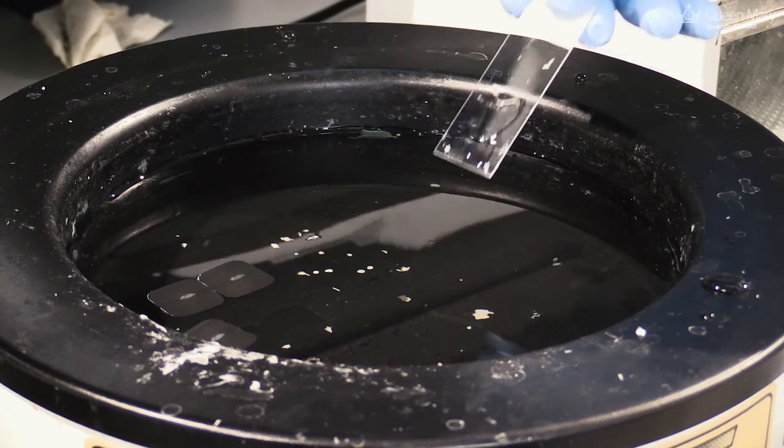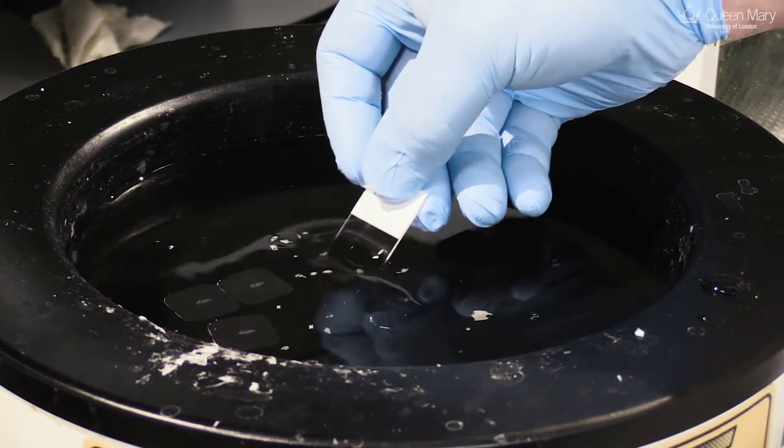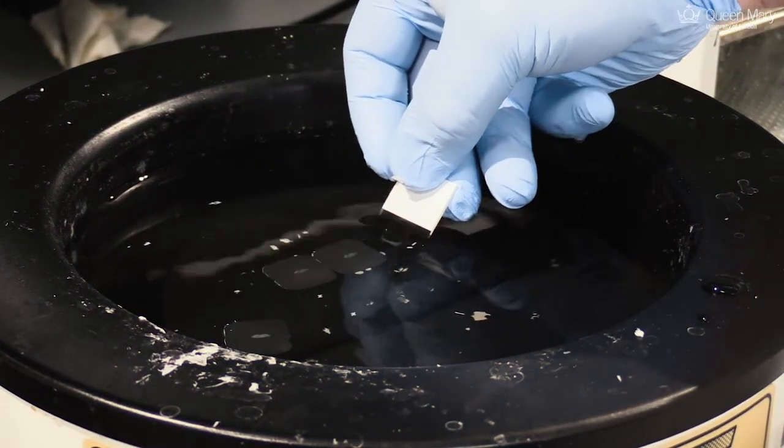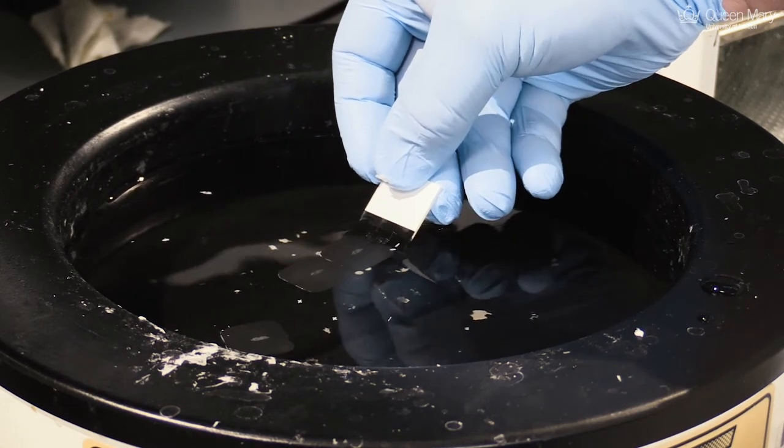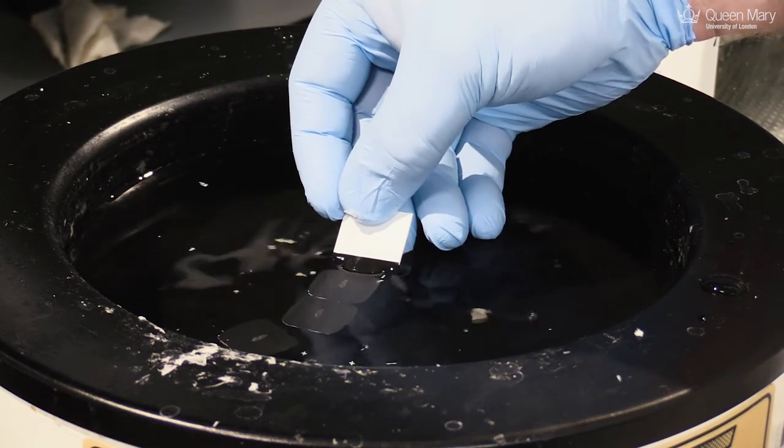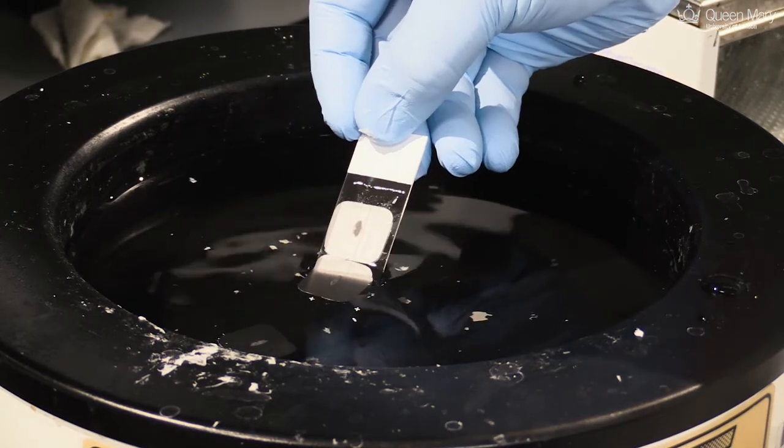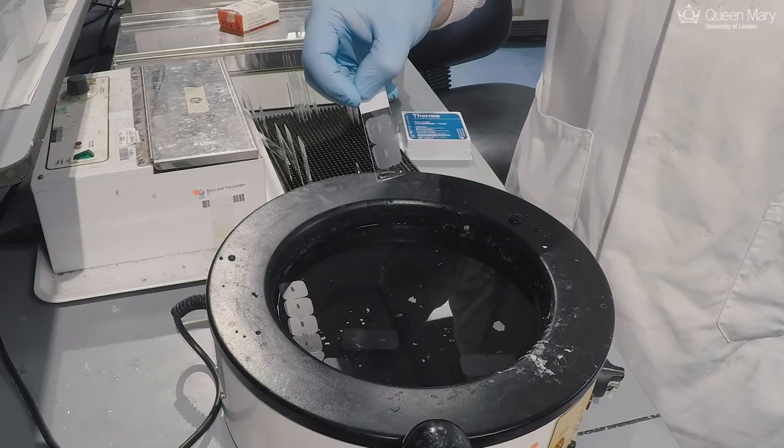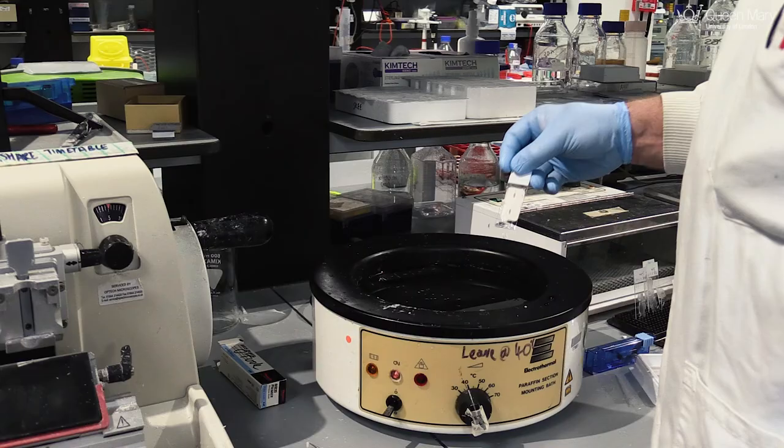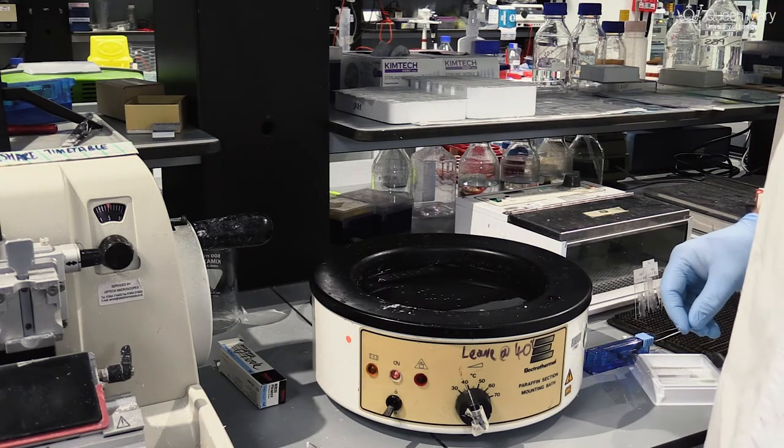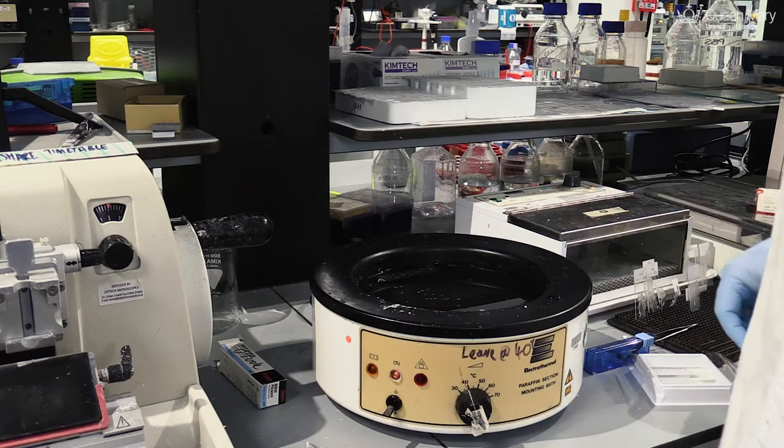These are actually coated microscope slides. We put them in underneath the section, allow the section to touch, and then pull them up. So we've got our nice thin tissue sections stuck to our microscope slide, ready for the next step, which would be staining and then imaging.